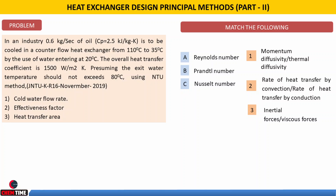The next problem is for students to solve and submit in the comment section. In industry, 0.6 kg/s of oil with specific heat 2.5 kJ/kg·K is to be cooled in a counter-current flow heat exchanger from 110°C to 35°C using water entering at 20°C. The overall heat transfer coefficient is 1500 W/m²·K and the exit water temperature should not exceed 80°C. Using the NTU method, calculate the cold water flow rate, effectiveness factor, and heat transfer area. This problem is from JNTUK R16 November 2019.